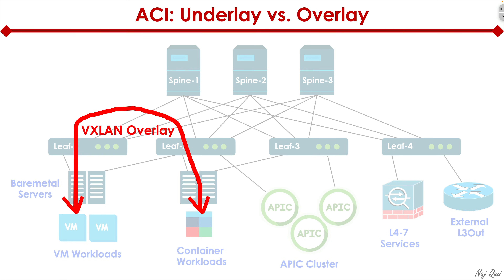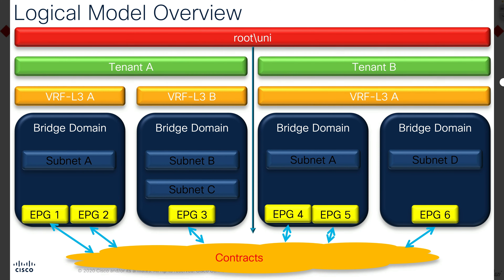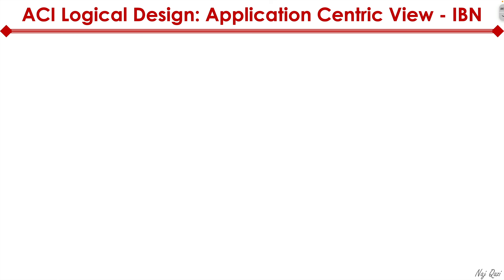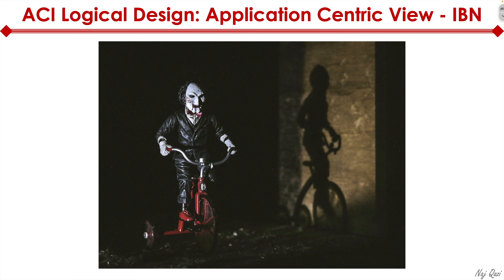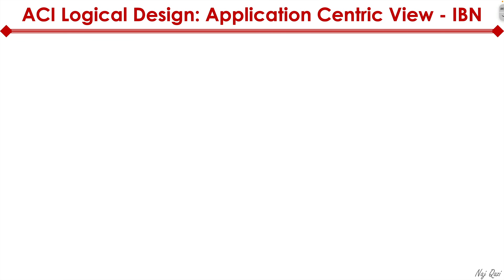At a CCNA level, that's all you need to know. At CCNP and beyond, we'll go into a lot more detail into ACI, including logical constructs like tenant, bridge domain, and EPGs. Now let's look at the logical design of ACI. There are a lot of logical constructs within ACI, and the big thing is it could be scary at first because it's a paradigm shift — you no longer define VLANs and subnets in a traditional way. It's a very different, application-centric view of the world.